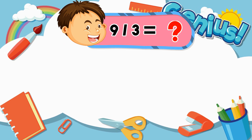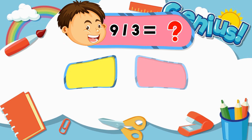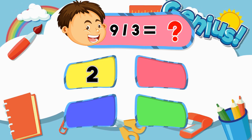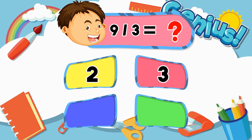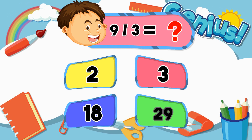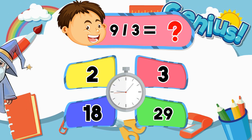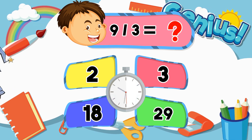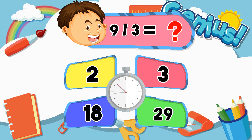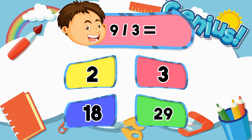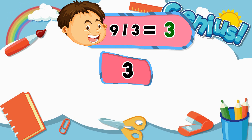What is nine divided by three? Two. Three. Eighteen. Twenty-nine. Three.